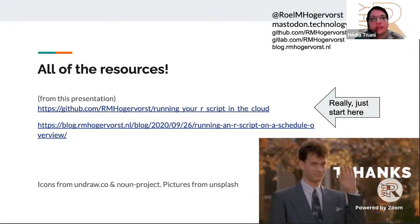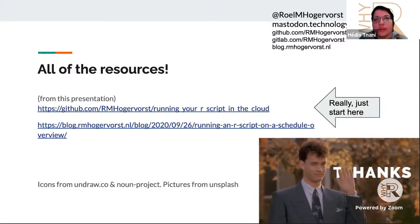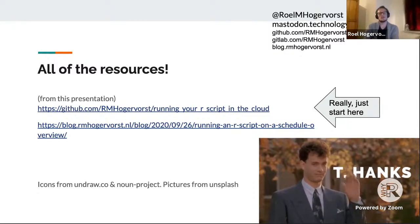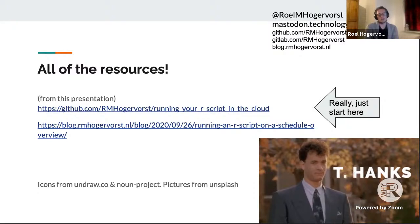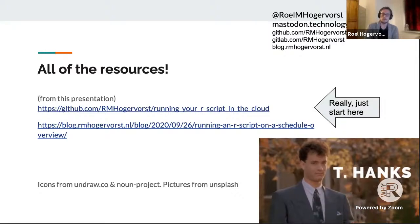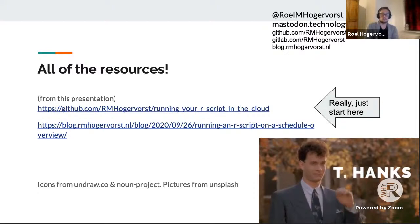The second question is: does renv also version software that is not related to R, like dependent Python packages used with an R project? That's a good question, because sometimes you have an entire R project that's also making use of reticulate to talk to Python. I believe the renv website actually shows that they also version Python versions. I believe it does — it's my final answer.